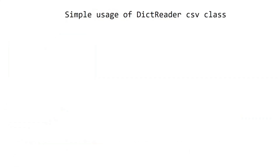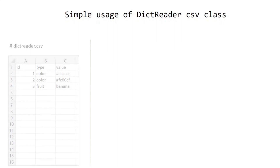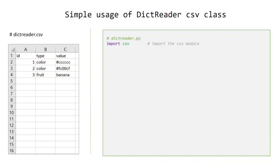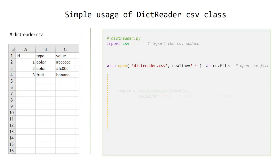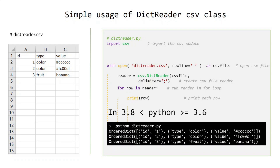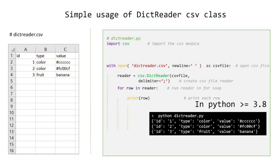Simple usage of the DictReader CSV class: we have a CSV file called dict_reader. Import the CSV module, open the CSV file, create a CSV file reader, run the reader in a for loop, and print each row. Run it in terminal. In Python versions greater than 3.6 but lower than 3.8 it returns an OrderedDict object; starting from Python 3.8 it returns a simple dictionary.